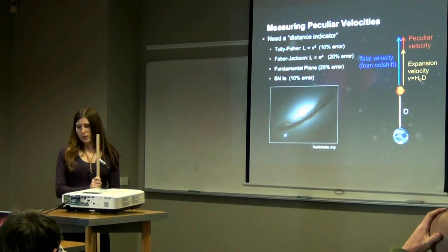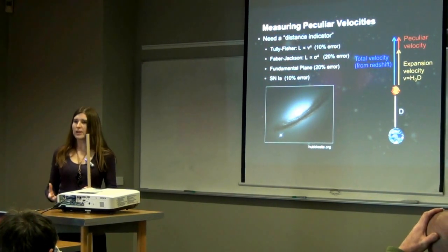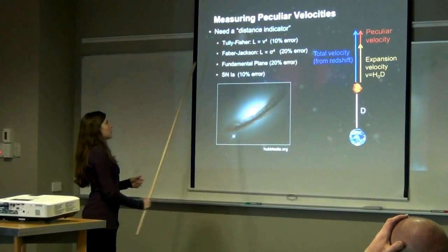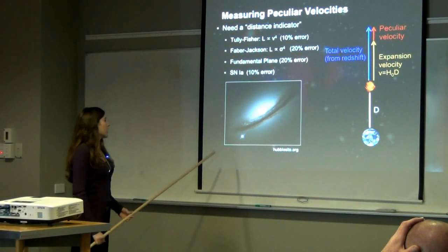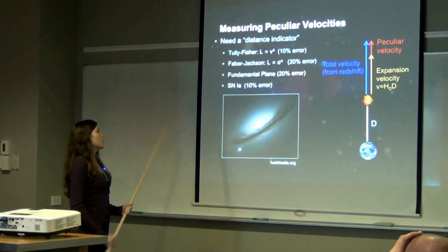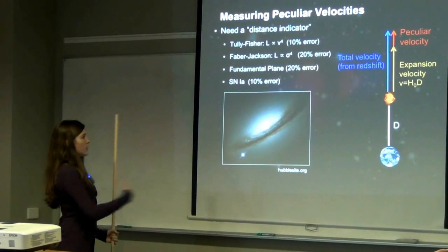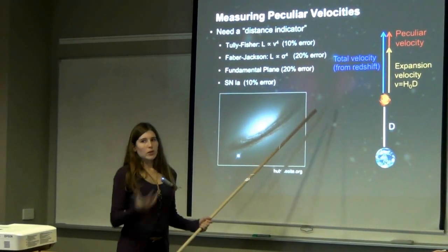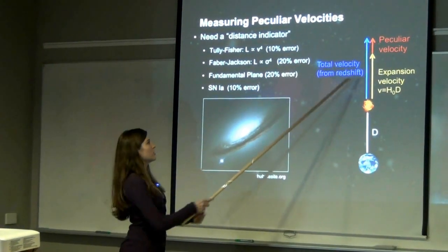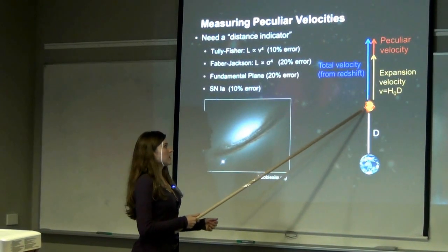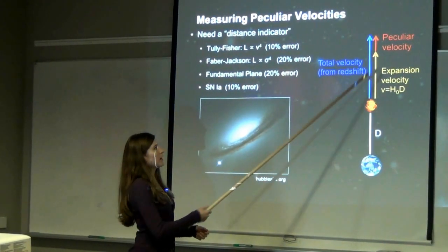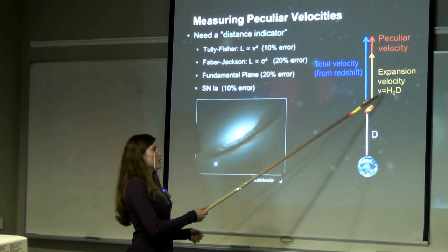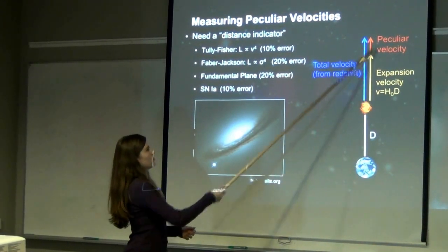How do we actually measure peculiar velocities? We need something called a distance indicator — something that lets us find the distance to a galaxy independently of its redshift. Examples are the Tully-Fisher relation, the fundamental plane relation, or type 1a supernovae. Supernovae are standard candles, meaning they always have the same brightness, so from the apparent brightness we can tell how far away a galaxy is. We know the total velocity of the galaxy along our line of sight from its redshift, and from the distance given by the supernova we calculate the expansion velocity via Hubble's law — expansion velocity equals the Hubble constant times distance. The difference between these two is the peculiar velocity.